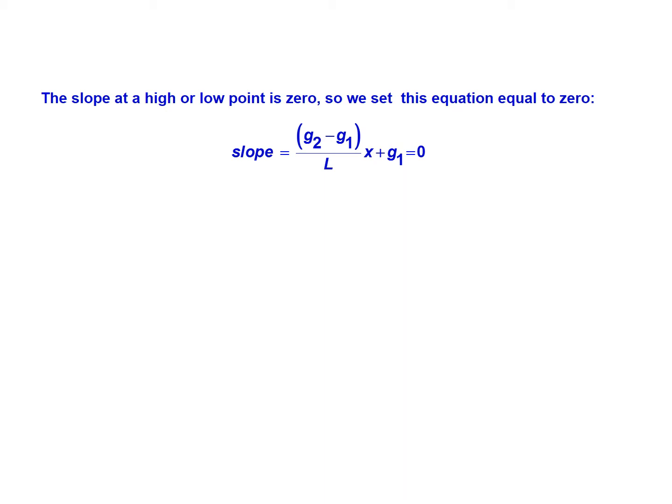The slope at a high or low point is going to be 0. This is only for the instances where the grades are opposite in sign to each other. So you have a positive grade followed by a negative or a negative followed by a positive. These assumptions and calculations only apply in those scenarios, so a true sag or a true crest vertical curve that has grades of opposite sign.